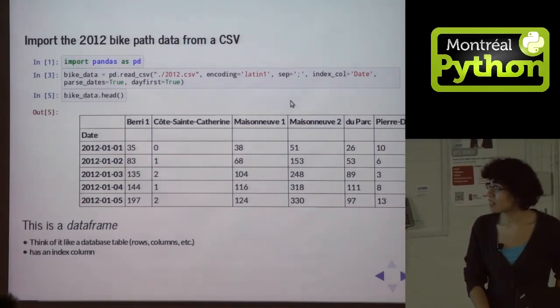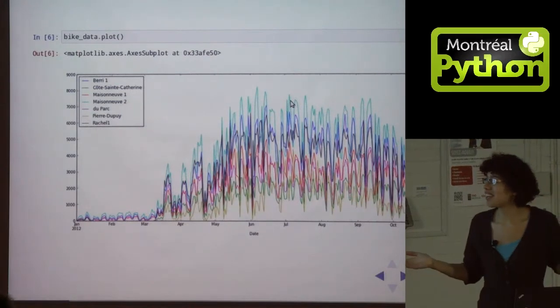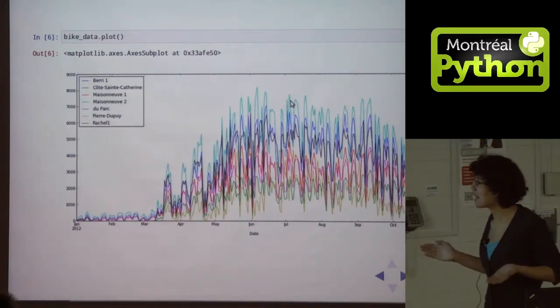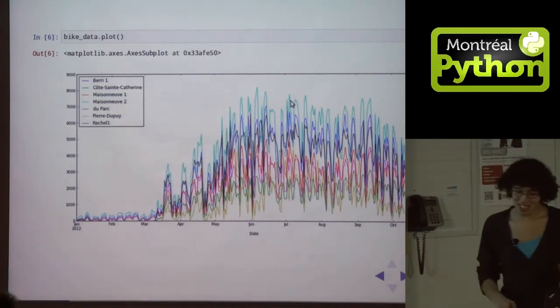Okay, so now we have this data frame, which we've called bike_data, and we want to plot it. So we do bike_data.plot, and we get this beautiful graph, which is a bit noisy. But otherwise very pretty.